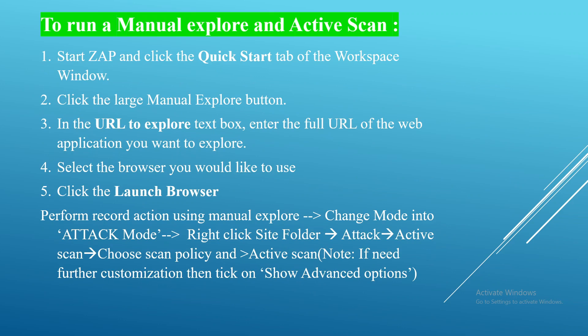So how can we perform the manual explore and active scan? These are the steps we need to follow. Start the app and click on the quick start menu tab, and on the workspace window click on the icon manual explore and enter the URL you need to perform the scanning on. Then select the browser you want to use — Chrome or Firefox.